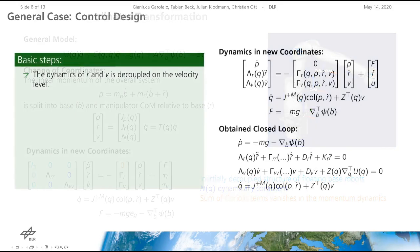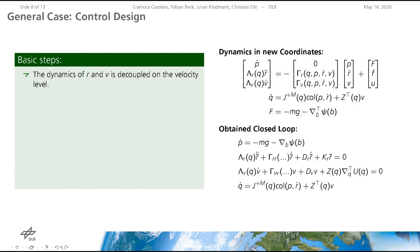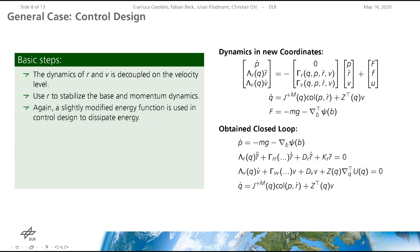Having obtained the system in new coordinates, the dynamics of the manipulator center of mass and the null space velocity are decoupled on a velocity level. The manipulator center of mass R is used to stabilize the base and the momentum dynamics. For this, a slightly modified energy function is used in the control design. The reference trajectory is chosen in the same fashion such that the energy is dissipated and the center of mass converges towards the desired reference.